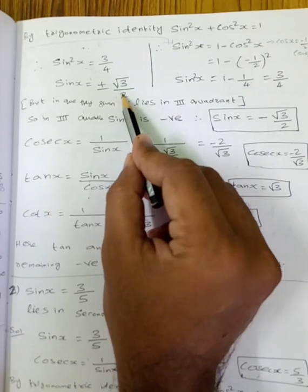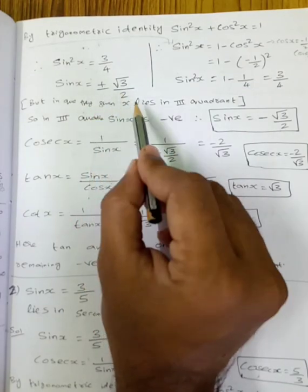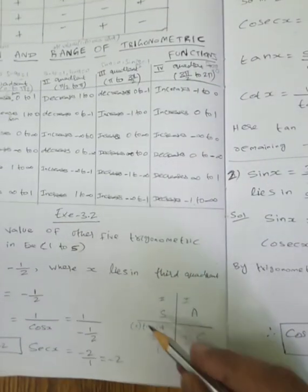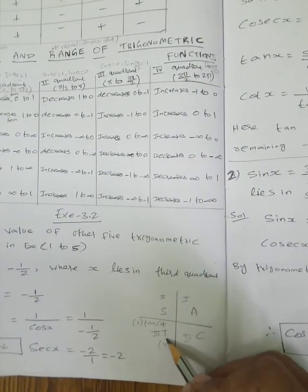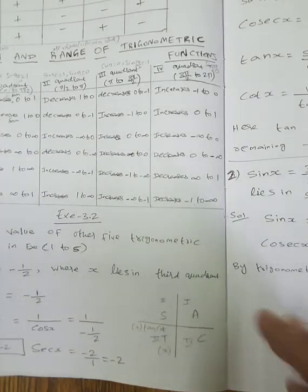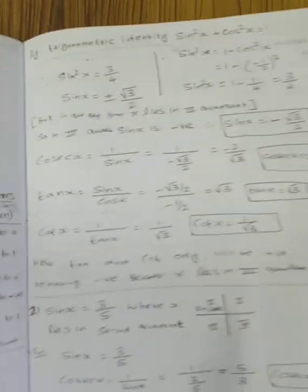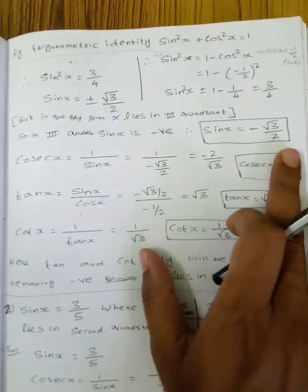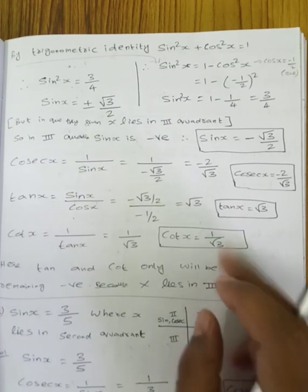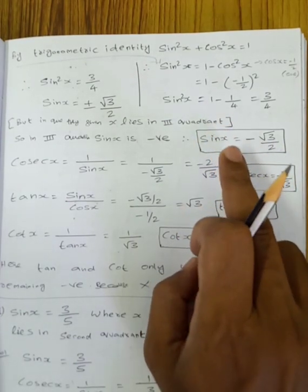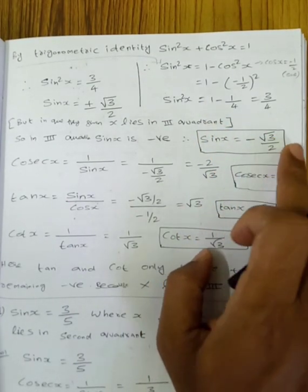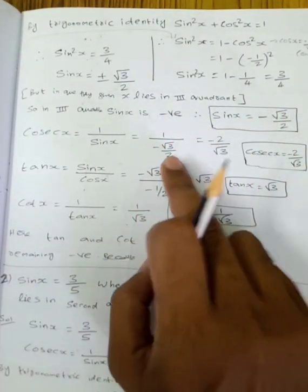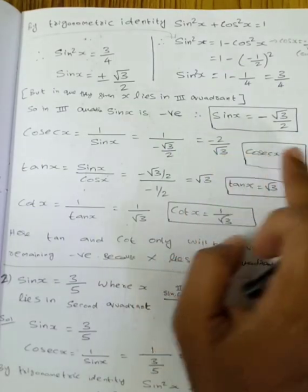But x lies in the third quadrant — in the third quadrant, tan equals positive, so sin is negative. The final answer: sin x equals minus root 3 by 2. Then cosecant x equals 1 by sin x, which is 1 divided by (minus root 3 by 2), so cosecant x equals minus 2 by root 3.